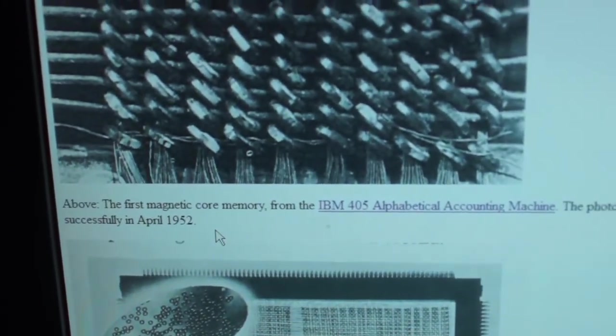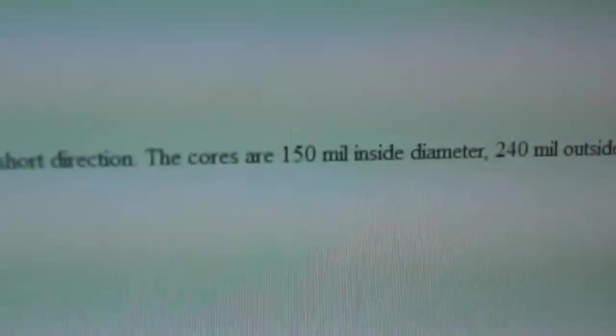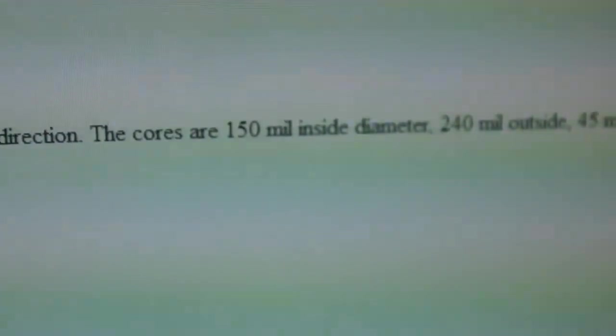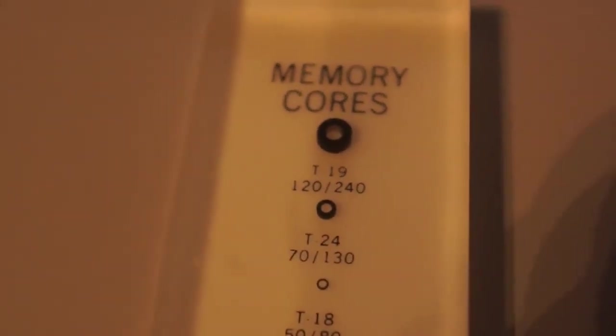And first core memory, which was about the same size. Where did it say here? The cores were 150 mils inside. Oh, not microns, mils. 240 outside. That's 120 and 240, so it's similar. Probably not the first one, but maybe the first standard generation.